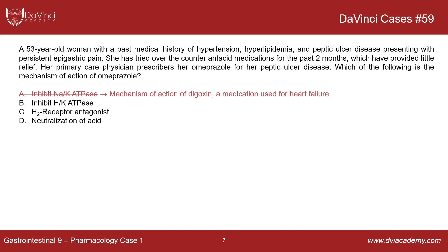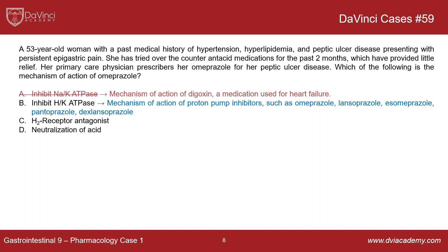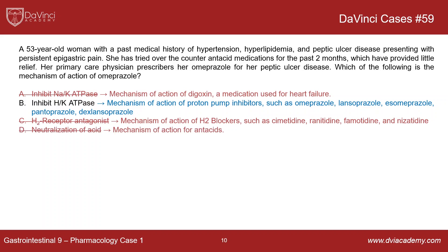Coming back to the question and running through the answer choices: inhibiting the sodium potassium ATPase is generally not compatible with life — the exception is digoxin, used in certain heart failure cases with a very narrow therapeutic window. Our answer is inhibition of the hydrogen potassium ATPase specifically in gastric parietal cells, which is the mechanism of proton pump inhibitors. H2 blockers work as H2 receptor antagonists, and antacids work by neutralization of acid. This patient with persistent peptic ulcer disease causing epigastric pain failed over-the-counter antacid therapy and is now trying omeprazole, a proton pump inhibitor.